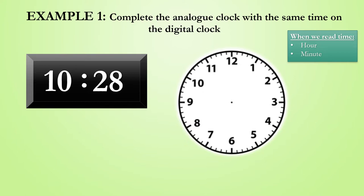Here we see that the digital clock has been completed with the time while a blank analog clock face has been given. We need to complete the analog clock with the same time as the digital clock. Let's first determine what time is displayed on the digital clock.